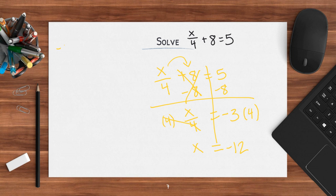Let's check ourselves. I have negative 12 divided by 4 plus 8, and I need to see if that equals 5. Negative 12 divided by 4 is negative 3. So does negative 3 plus 8 equal 5? Yes, it does. Good job.